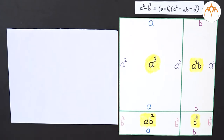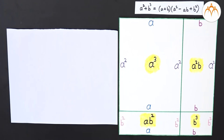Hello friends. You already know some factorization formulae — one of them is a squared minus b squared equals a plus b into a minus b. Now let us try to derive a few more such formulae. Let us begin with a cube plus b cube and try to have a factorization formula for this.